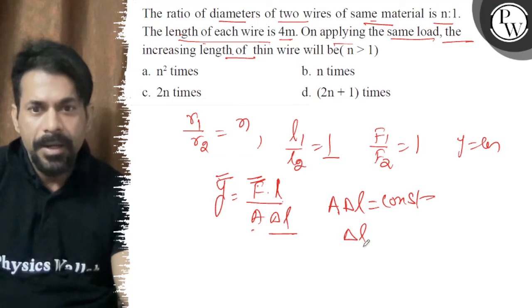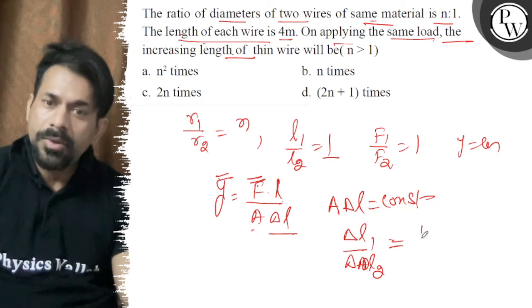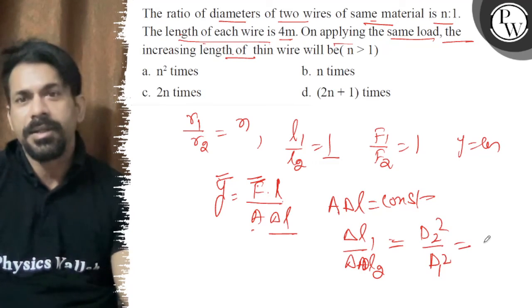So ΔL1/ΔL2 is nothing but d2²/d1². The diameter ratio is n:1, so this becomes 1/n².